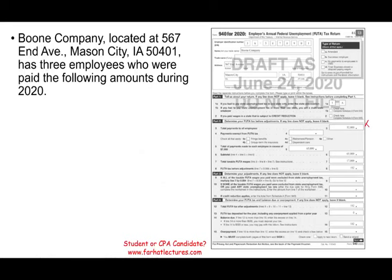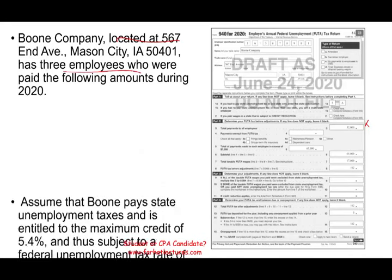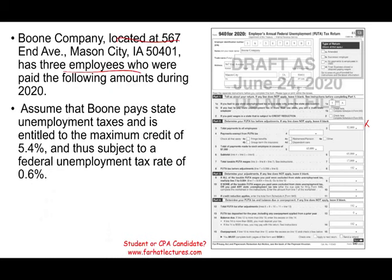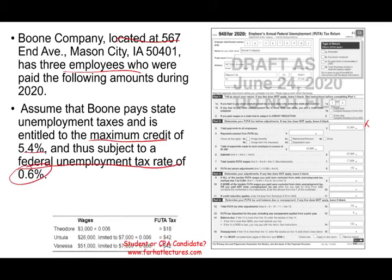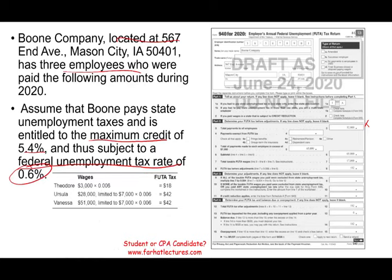Boom Company had three employees who were paid the following amounts during 2020. Assume that Boom pays state unemployment and is entitled to the maximum credit of 5.4%, meaning they are in good standing — therefore their federal unemployment rate is 0.6%. Theodore was paid $3,000, Ursula was paid $28,000, and Vanessa was paid $51,000. First, we add their total payments.